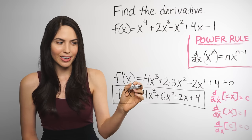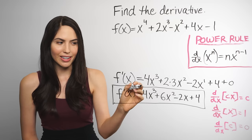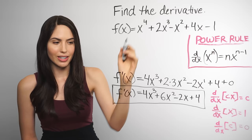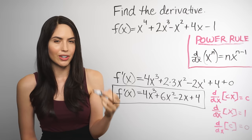And f prime of x, the derivative, tells you the rate at every x value of that original function — the slope or instantaneous rate of change, the slope of the tangent line or instantaneous rate of change of the original function.